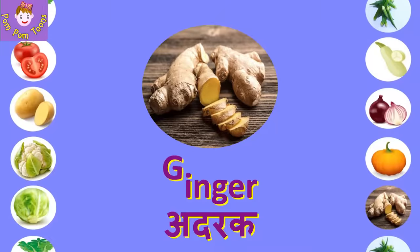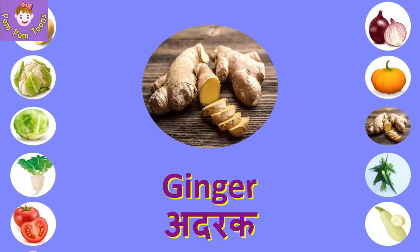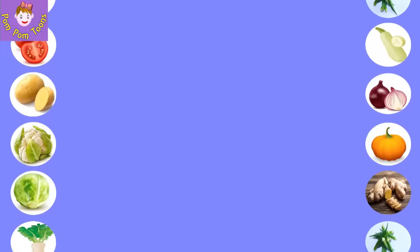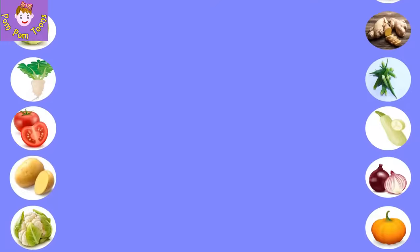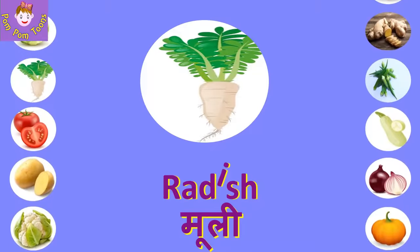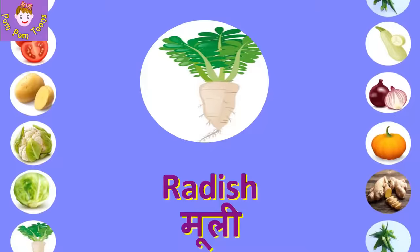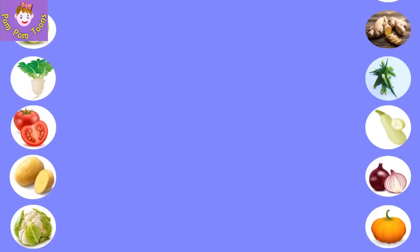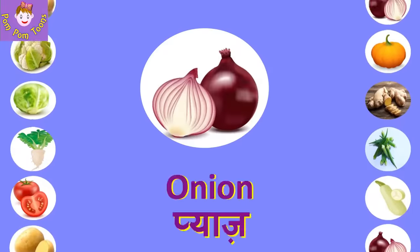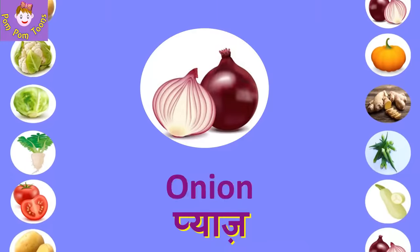G-I-N-G-E-R, Ginger. O-N-I-O-N, Onion, Piyas. Also Muli (Radish).